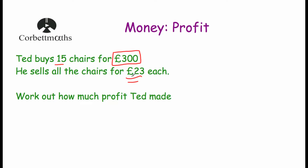So if we multiply 23 by 15, we'll see how much money Ted made. Let's take our 23 and multiply it by 15. So 5 times 3 is 15, put our 5 down, carry our 1. 5 times 2 is 10, plus 1 is 11.